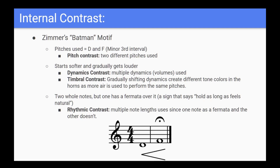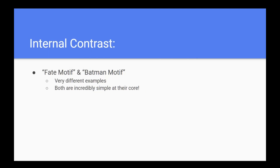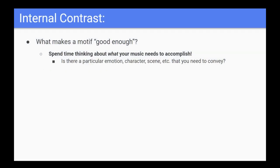These are two very different examples, but the one thing they have in common is how simple they are. Motifs don't need to be complicated in order to create memorable melodies — they just need to be good enough. After that, it comes down to the skill of the composer to build something bigger from it. But how do you know if it is good enough? Well, fortunately for us, it's quite simple. The very first step I recommend for writing a quality motif is to spend a bit of time thinking about what you need it to do for your music.